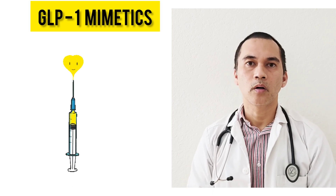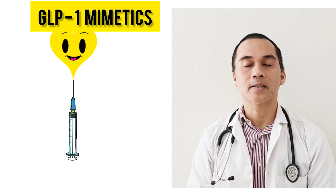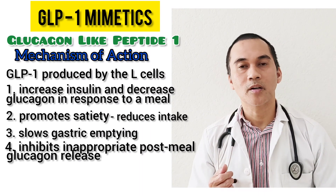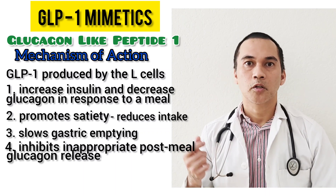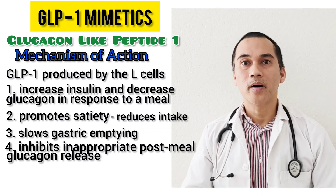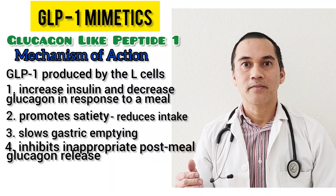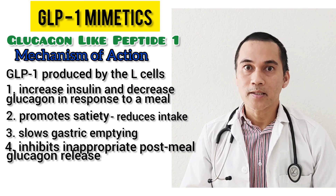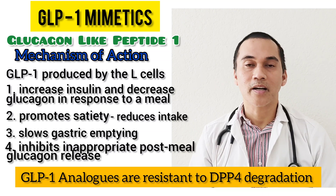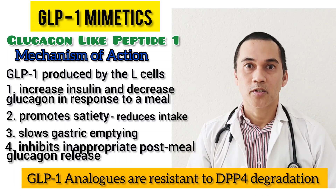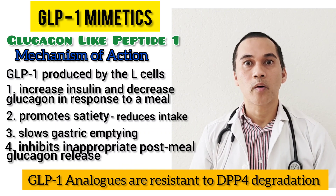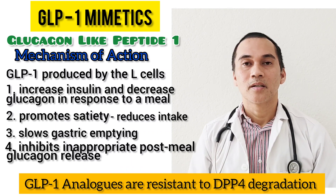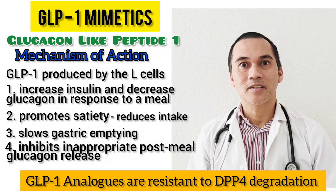Let's talk about the glucagon-like peptide one mimetics or analogs, or the GLP-1 mimetics. As noted, endogenous GLP-1 decreases blood sugar by increasing insulin release and decreasing glucagon in the pancreas, decreasing sugar production by the liver, and slowing down gastric emptying. But GLP-1, once released, is degraded or inactivated by the DPP-4 enzyme. Thankfully, these analog drugs are resistant to DPP-4 degradation. The endogenous incretin GLP-1 produced by the small intestines has a half-life of only one to two minutes, but the mimetics or analogs can stay longer — some of these injections are given once a week.